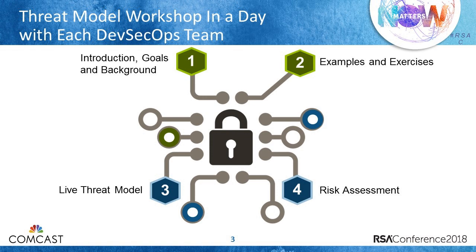In the workshop, we have four steps. The first two steps take about an hour and a half to two hours. We introduce the topic of security, talk about background goals, and go through some exercises. This is important because not everyone is a security expert. As part of these discussions, we talk about how to perform an Agile and Continuous Threat Model. I'm going to give you a couple of examples of the exercises in the full presentation, so come attend the RSA conference Thursday, April 19th at 9:15 a.m.